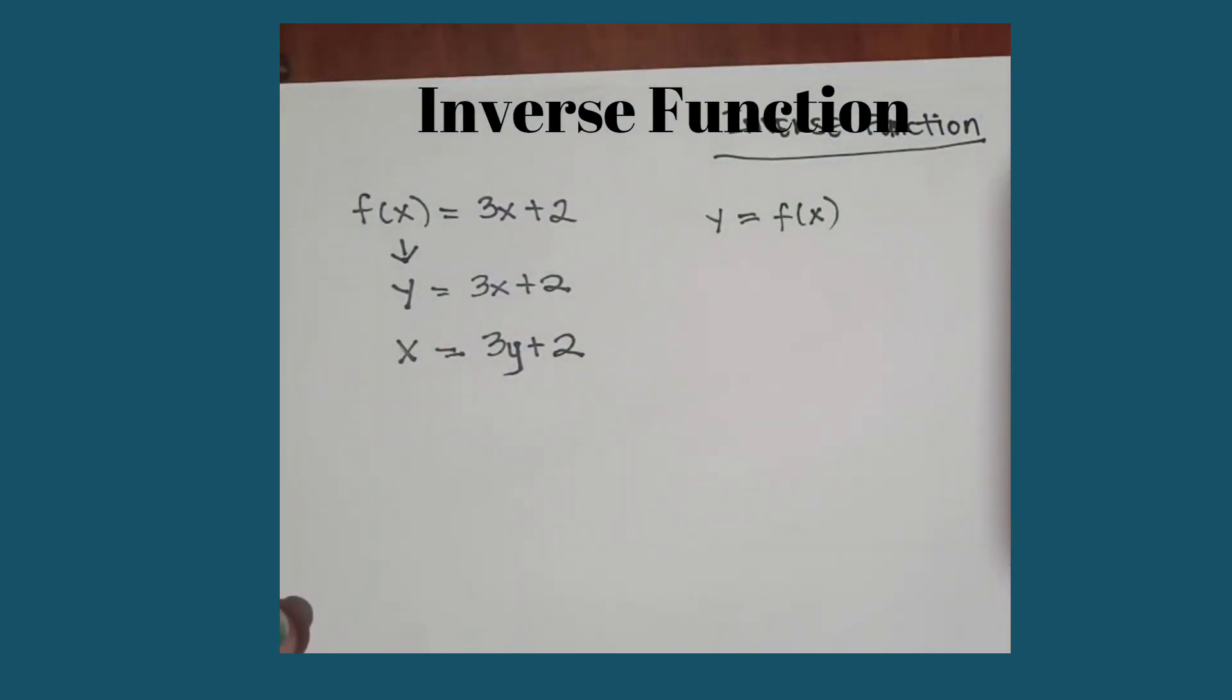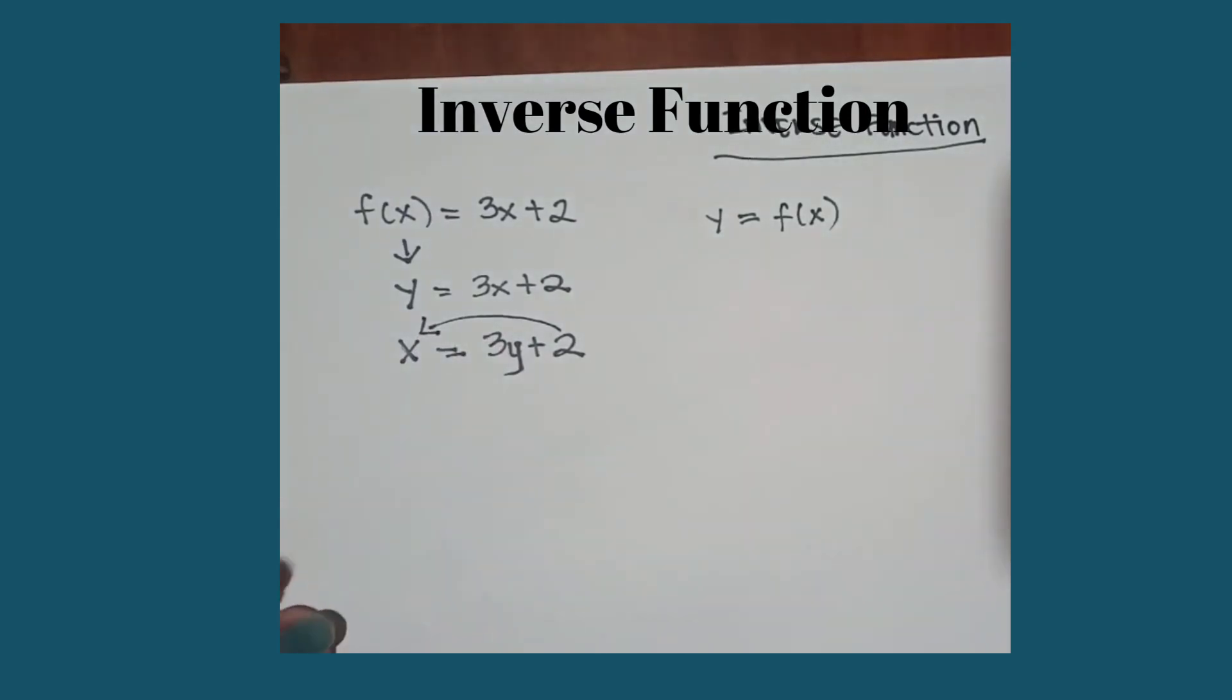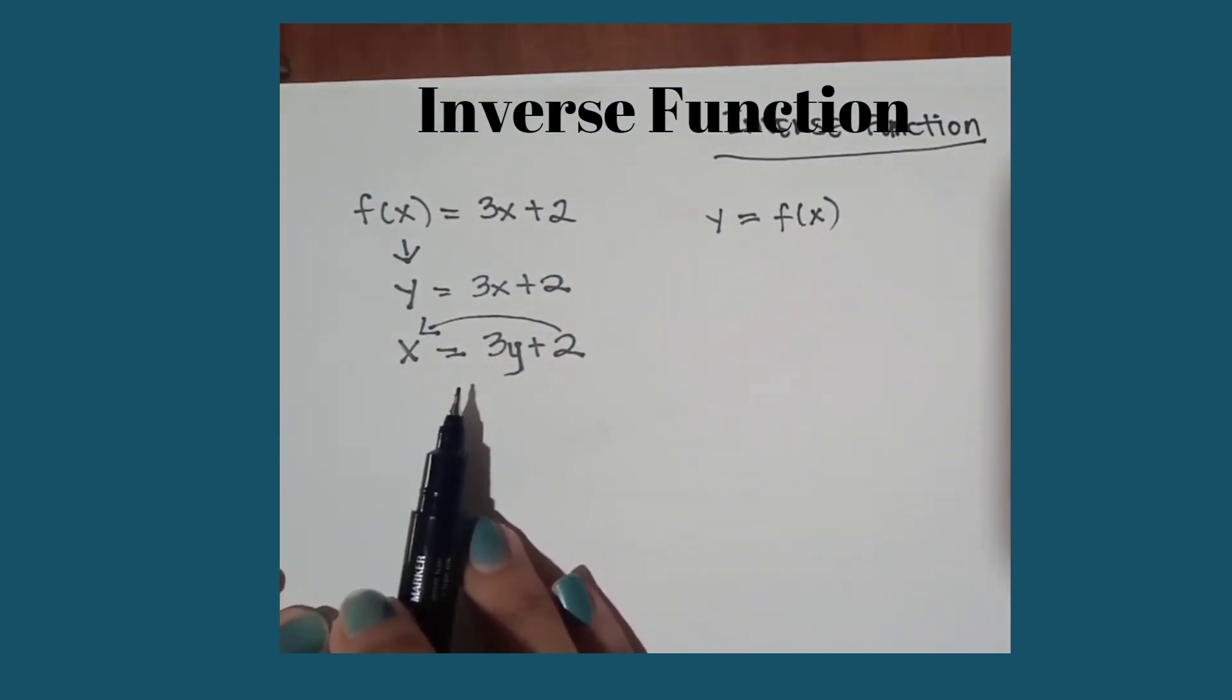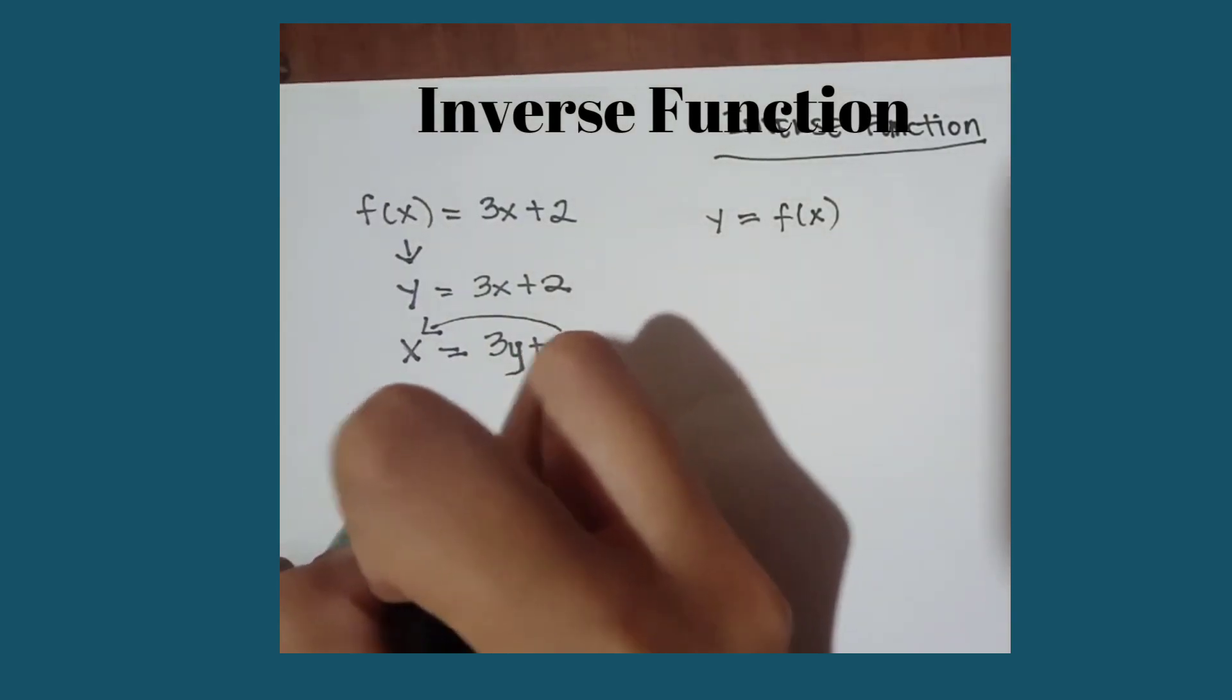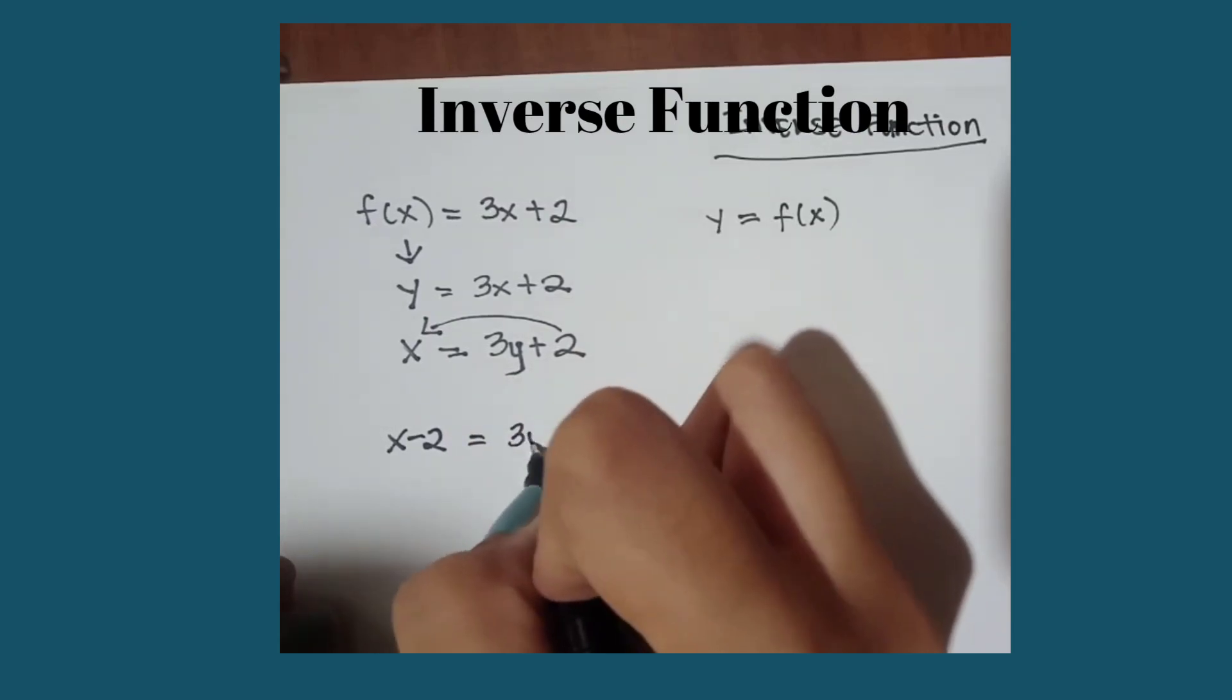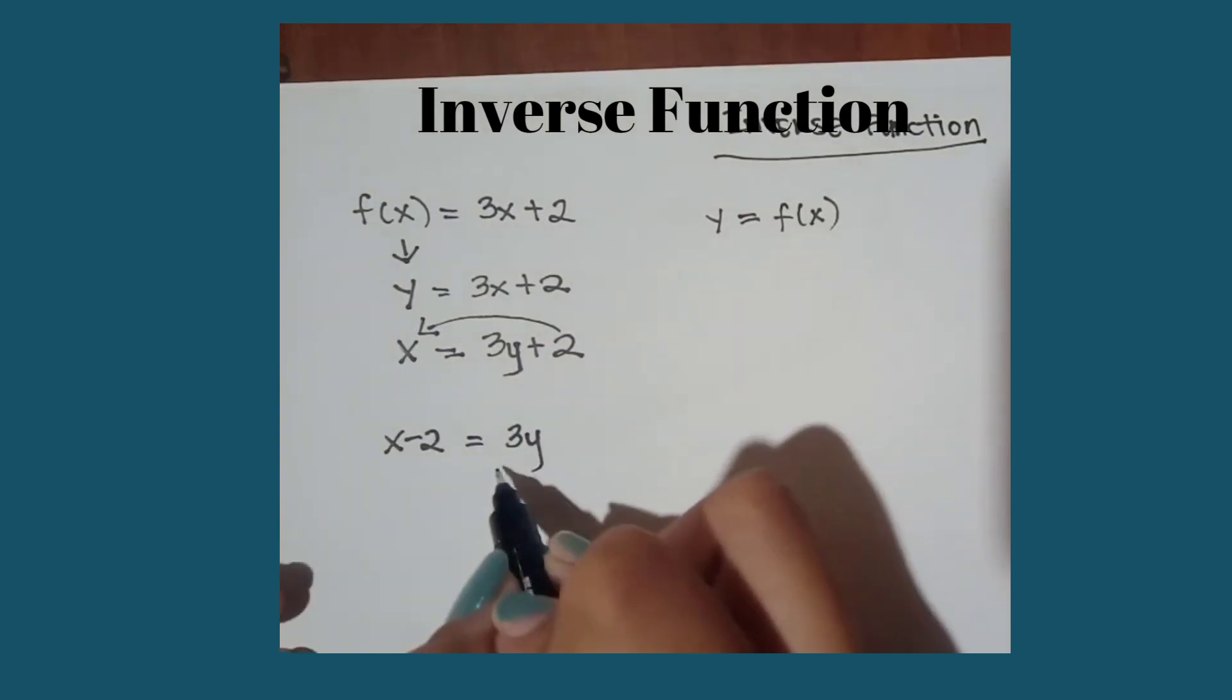Then now we are going to solve for y in terms of x. But first, we have to transpose 2 to the other side because we need to eliminate 2 and 3. So it will now become x minus 2 is equal to 3y. Then we have to divide both sides by 3.